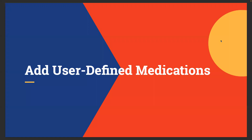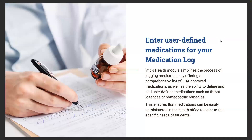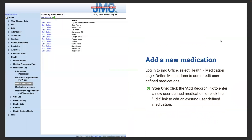We are going to start with adding user-defined medications. JMC's health module simplifies the process of logging medications by offering a comprehensive list of FDA-approved medications, as well as the ability to define and add user-defined medications such as throat lozenges or homeopathic remedies. This ensures that medications can be easily administered in the health office to cater to the specific needs of students. You can log into JMC office, select Health, Medication Log, then Define Medications to add or edit user-defined medications.